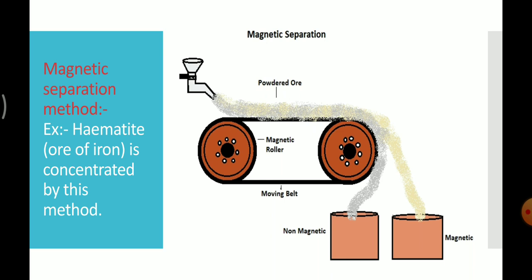The second type of concentration of ore is the magnetic separation method. This method is based on the magnetic properties of a metal ore. It is used to concentrate magnetic ores from non-magnetic impurities, and vice versa.